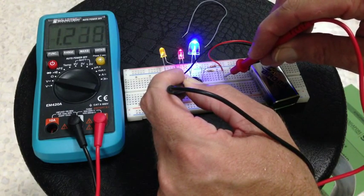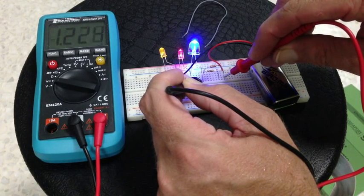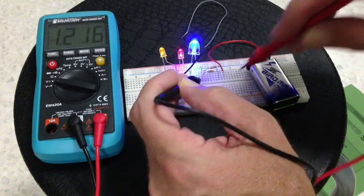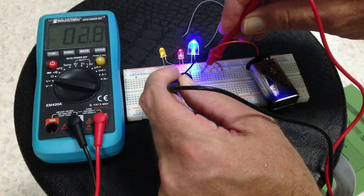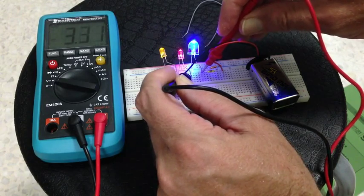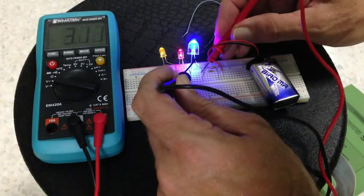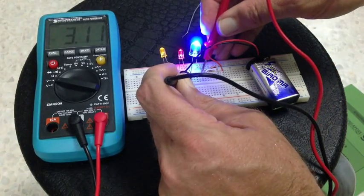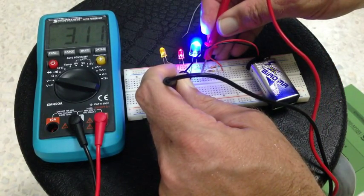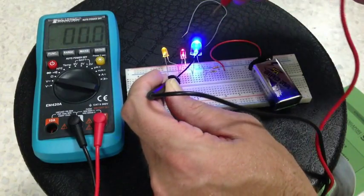So what happens is the LEDs have their own voltage. The blue one is getting good contact here. 3.11 volts, that's above 3 volts.